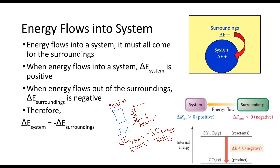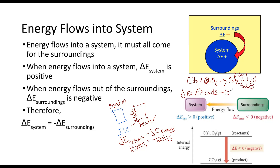For chemistry purposes, when we talk about delta E, we talk about a chemical reaction. For example, the combustion of methane — when we ask what is delta E, we're asking: what is the energy of the products, our final state, minus the energy of the reactants, our initial state? That's how we actually do it for chemistry.